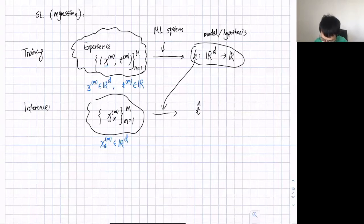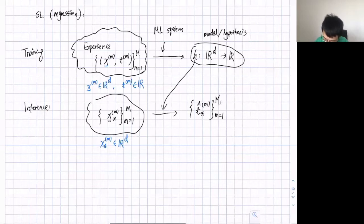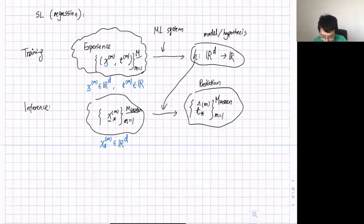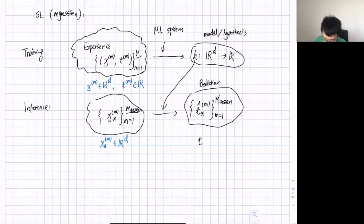I call the prediction T-hat star m. This is my test set. The prediction is very important in machine learning. Usually after you train a model and do inference, you would like to evaluate your model — is it good? If not, can we adjust it? You also have the true labels, T star m.